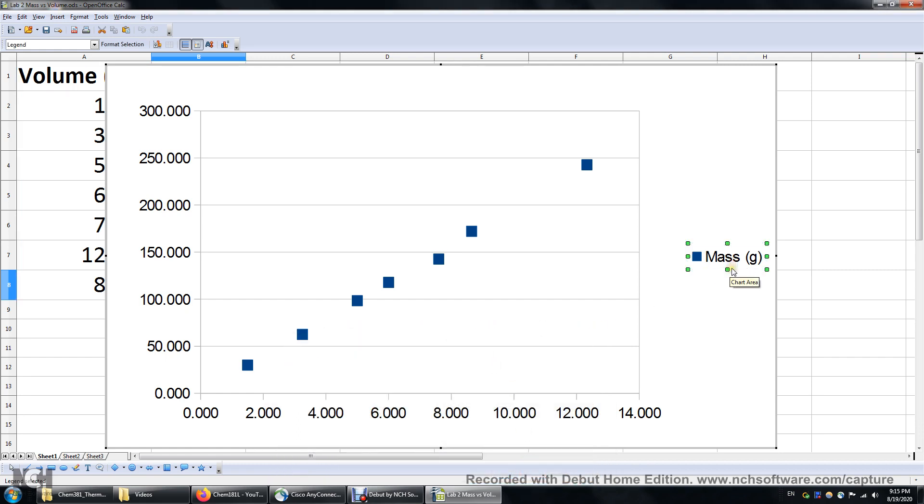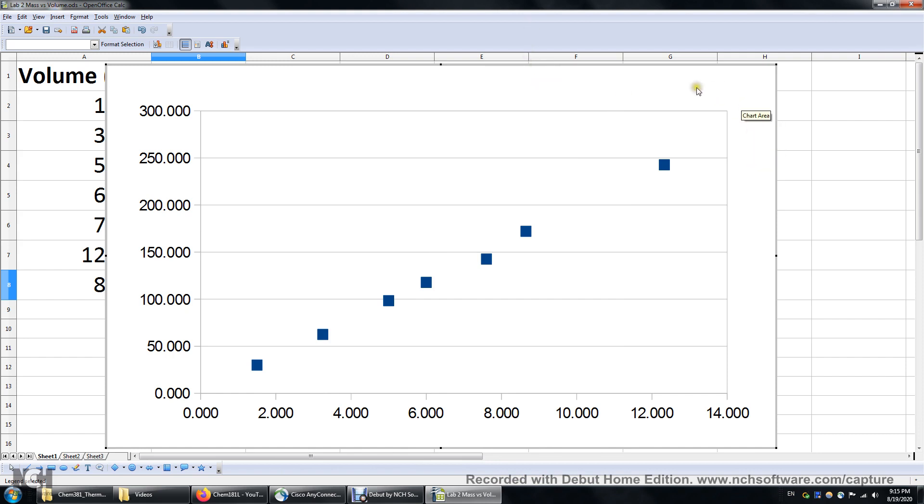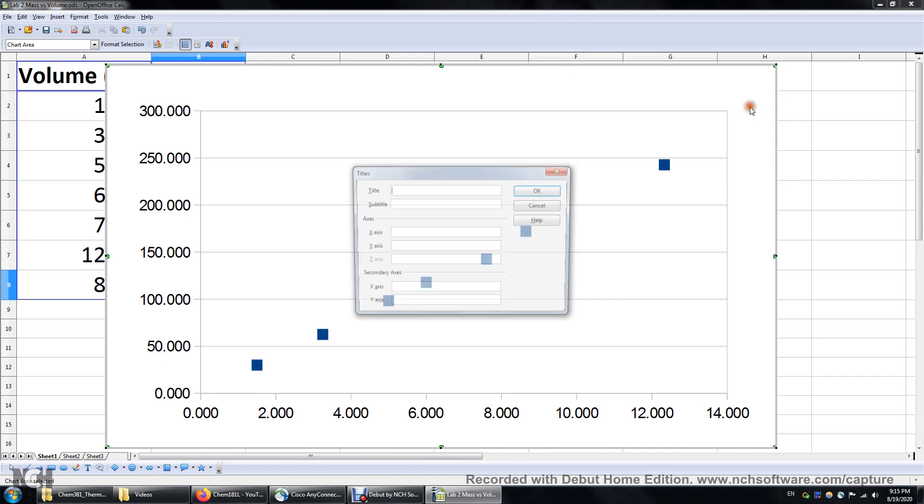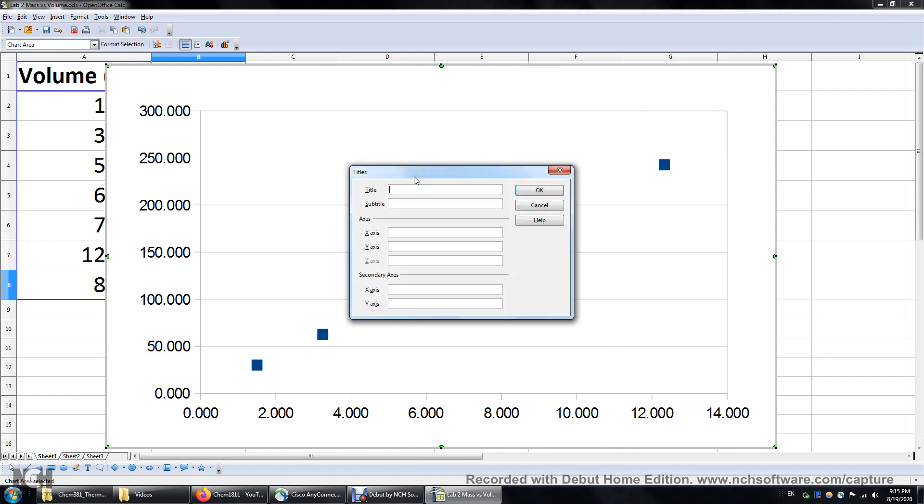We don't need the legend, so I'm going to delete this and then right click somewhere here. Insert titles. Determining the density of unknown metal. You can think of any other title as long as your title is concise and informative. The x-axis is the volume in milliliters. The y-axis: mass in grams.